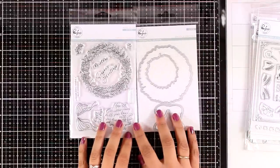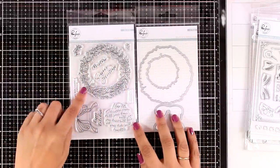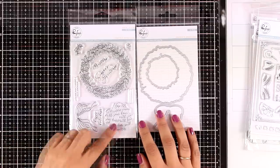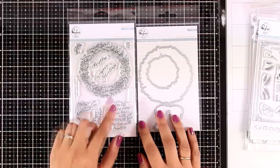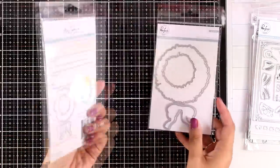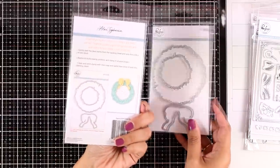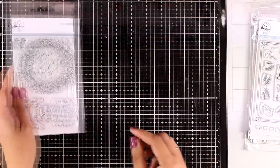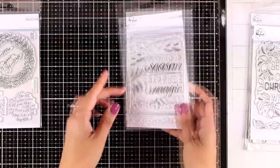Let's start with that wreath stamp set. This one is called Season Greetings. You get the wreath as well as a bow and many sentiments that you can play with. Notice that the matching dies are not connected so you can cut out only the inside, the outside, or use them both.